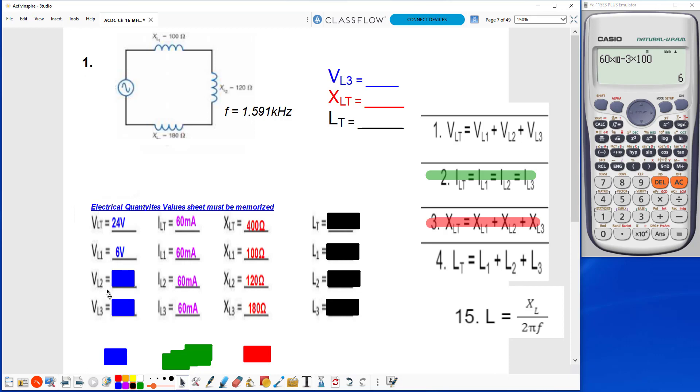So the voltage through the second inductor is equal to 60 milliamps times 120 volts, which is 7.2. VL3 is equal to 60 milliamps times 180 ohms of inductive reactance giving me 10.8.